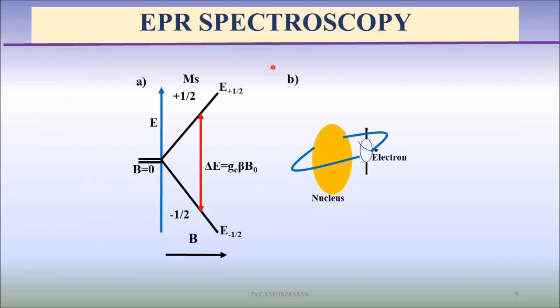We will quickly see EPR spectroscopy. In the absence of magnetic field, the two spin states are degenerate. In the presence of external applied field, the two states split.